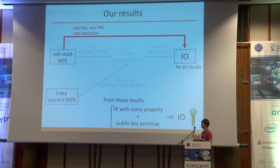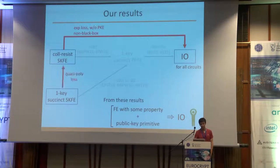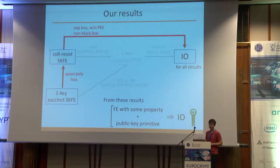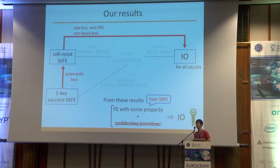Based on this motivation, we show the following results. We show how to construct I.O. for all circuits based only on sub-exponentially secure collusion-resistant SKFE. Our construction is non-black-box, so we can circumvent the impossibility results shown by Asharov and Segev. We also show that we can construct collusion-resistant SKFE based only on single-key succinct SKFE with quasi-polynomial security loss. So by these results, if we have functional encryption with succinctness or collusion-resistant SKFE, we can construct I.O. for all circuits.